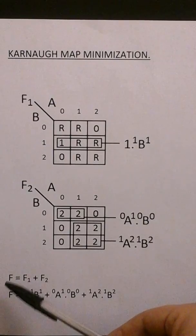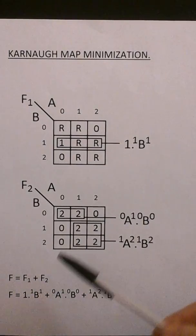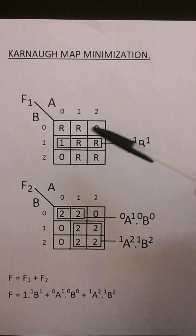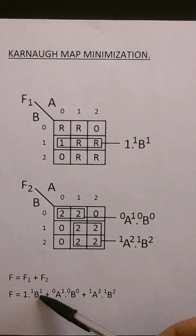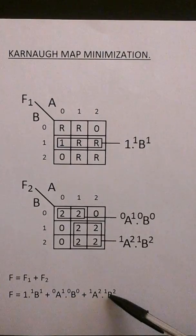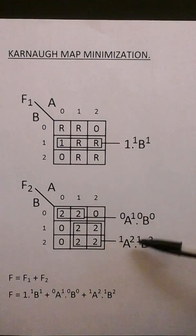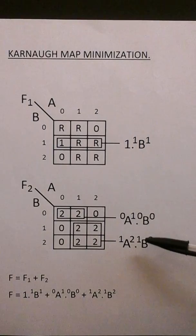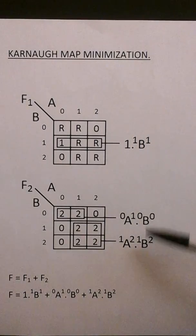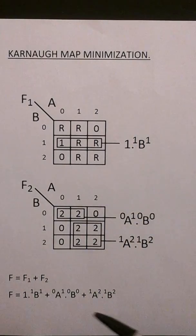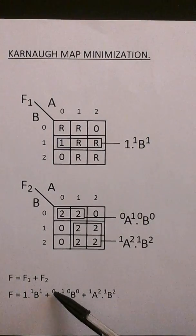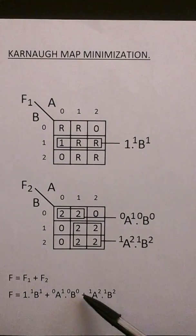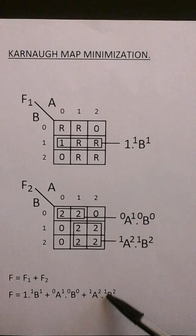So F the function equals F1 max F2. So it's basically F1 is this term and F2 is this term, so basically you just connect all the terms of both of F1 and F2 and connect them together via the maximum function. So you're left with F equals 1 min B1, 1 max A0, 1 min B0, 0 max A1, 2 min B1, 2.